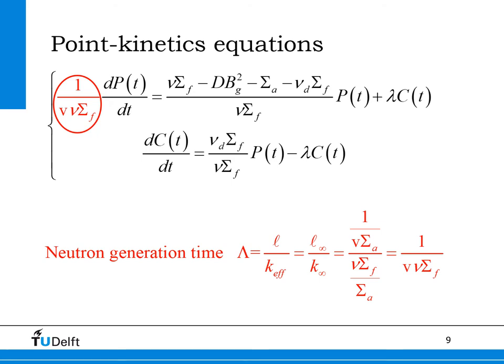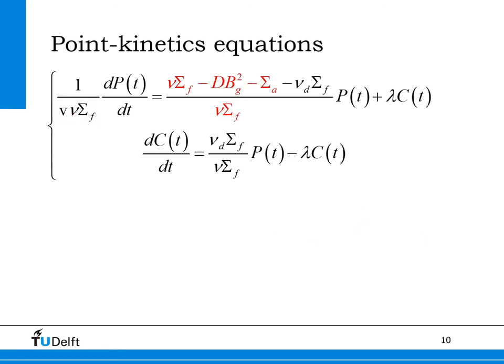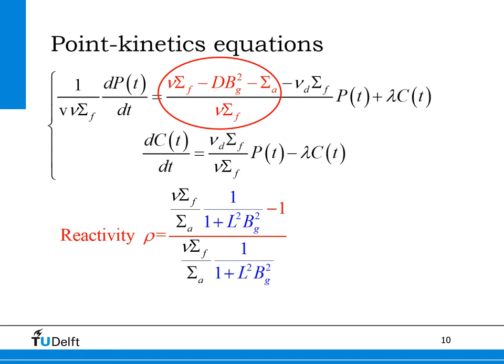This set of equations is the same as on the previous slide, but now with the total neutron flux converted to the fission neutron production rate in the core. The term in red on the left-hand side is called the neutron generation time — it is the prompt neutron lifetime L divided by the effective multiplication factor k-effective — and has the meaning of the average time needed for a neutron to create one new fission neutron. The red term on the right-hand side can be rewritten using the reactivity of the reactor core. To derive an expression for the reactivity, we first divide the red terms by the macroscopic absorption cross-section and then by 1 plus L² B², giving the blue parts in the equation at the bottom of the slide.